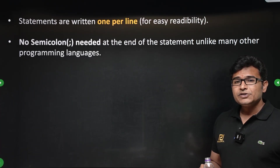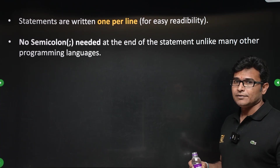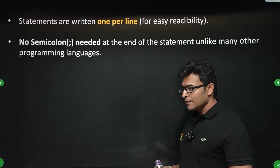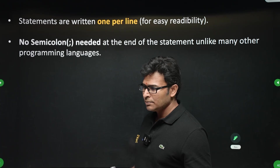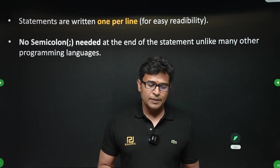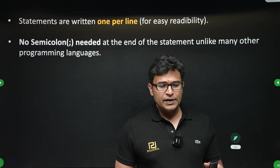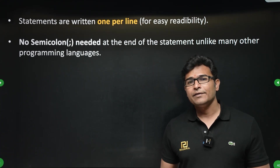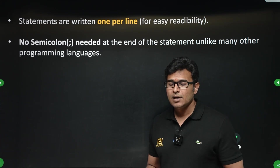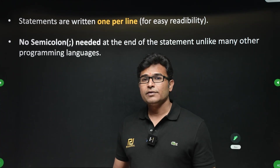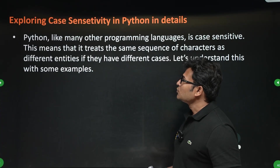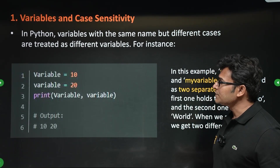You have to write statements one per line. If you look at other programming languages like C, C++, or Java, after every line there is a semicolon. But here in Python, there will be no semicolons.